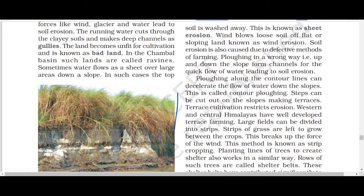The third type is wind erosion — wind blows loose soil off flat or sloping land. In desert areas, fast winds carry heavy sand to nearby areas, and fine powdery sand is carried far away and deposited. Soil erosion is also caused by defective methods of farming — ploughing up and down the slope forms channels for the quick flow of water, leading to erosion.